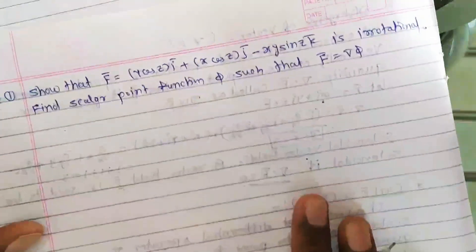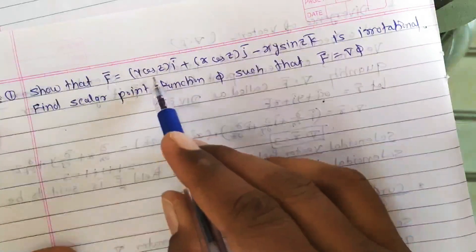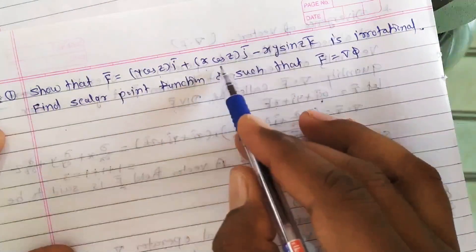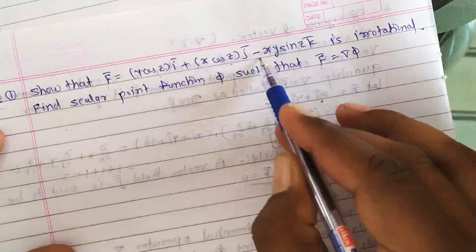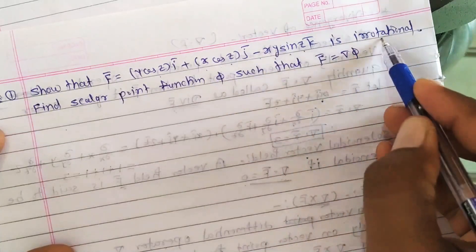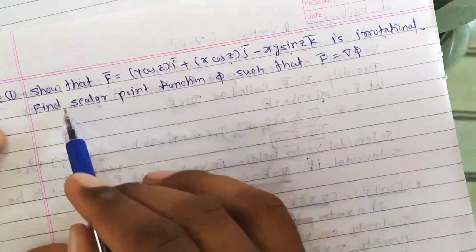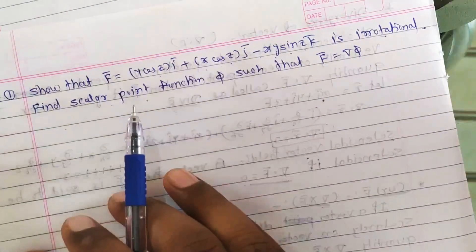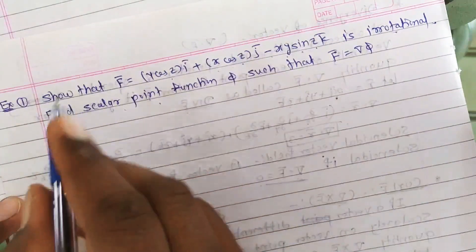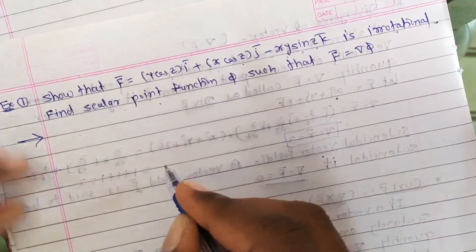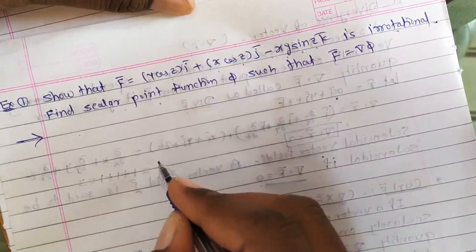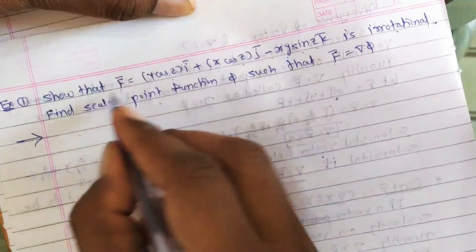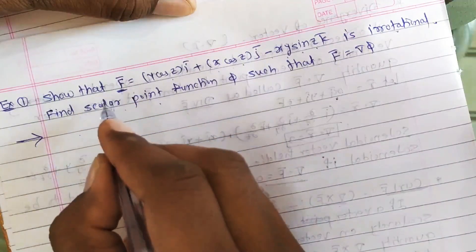Problem on irrotational vector field. The question is: show that F̄ = y·cos(z) î + x·cos(z) ĵ − xy·sin(z) k̂ is irrotational and find scalar point function φ such that F̄ = ∇φ. Whenever F̄ is irrotational, we know that F̄ is irrotational if ∇ × F̄ = 0.